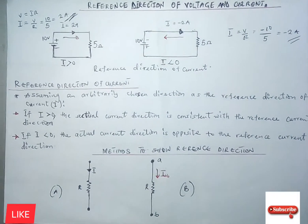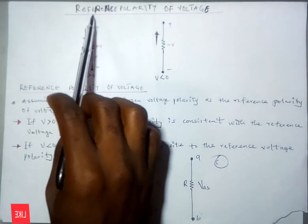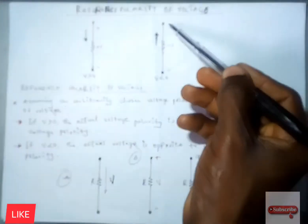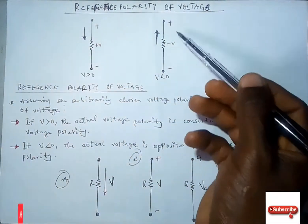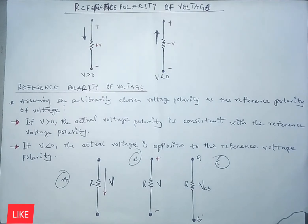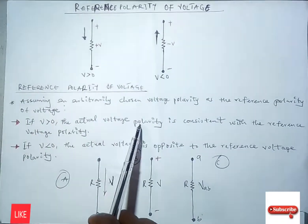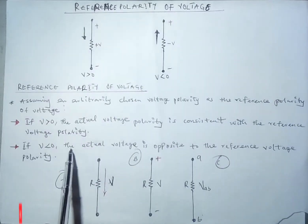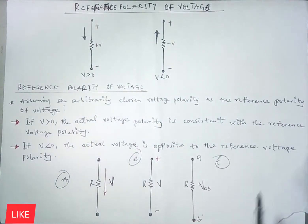Now, moving to another concept known as reference polarity of voltage. This is similar to the reference current direction. The voltage reference polarity is also an arbitrarily chosen polarity. If the resultant calculation for the voltage is greater than zero, the actual voltage polarity is consistent with the reference voltage polarity. And if it is less than zero, the actual voltage is opposite to the reference voltage polarity.